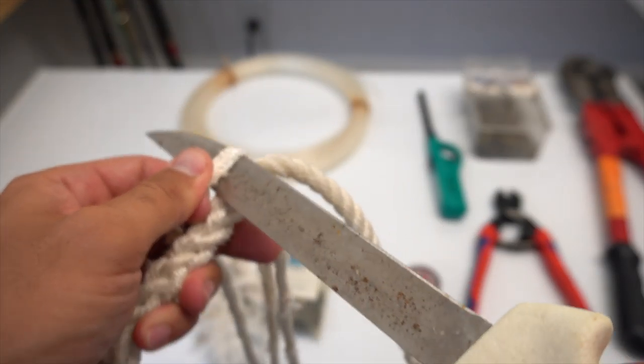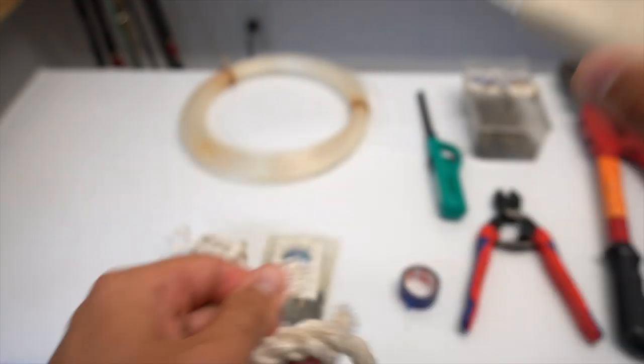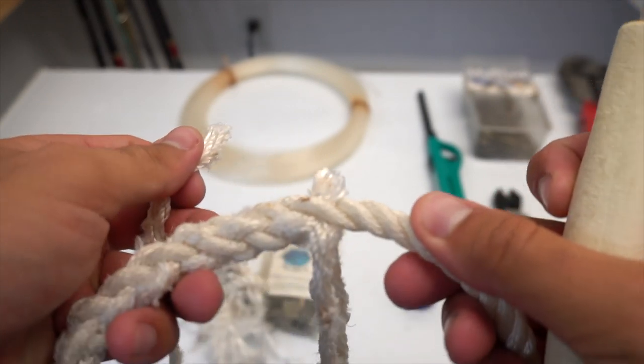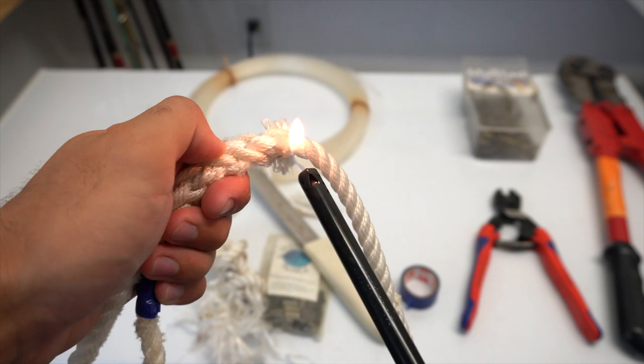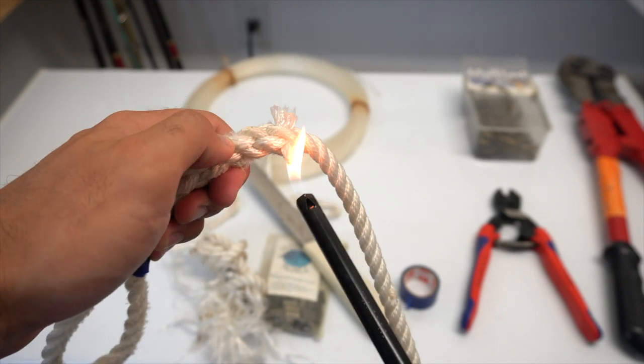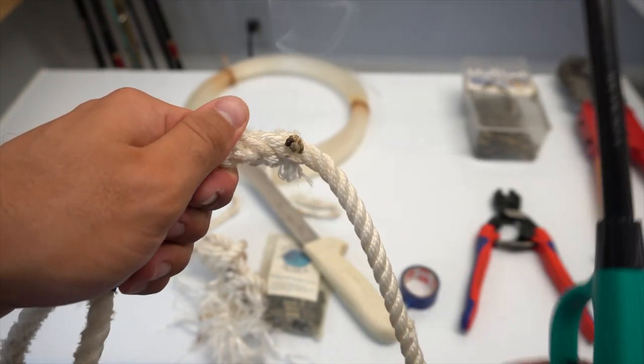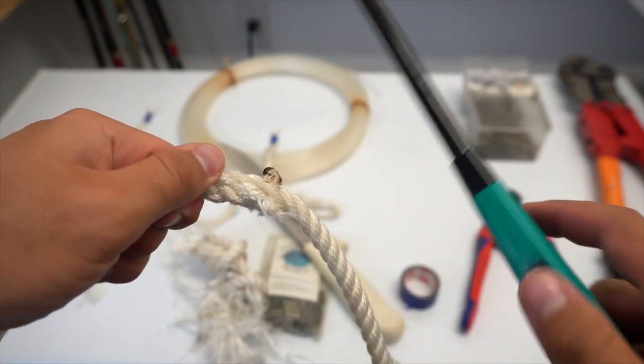And then all you do is you take your knife and you cut each strand, but you want to make sure you leave a little bit of rope there because then you're going to take your lighter and melt each end. You want to make sure that the end is completely melted together. So when it hardens, it's a pretty solid connection right there.